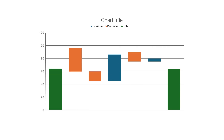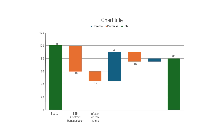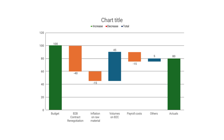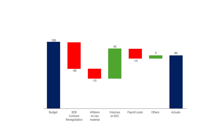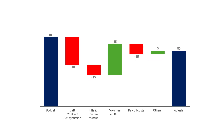Let's design one. Start by using clear categories that match your story — for example: B2B contract renegotiation, inflation on raw materials, volumes on B2C, and payroll costs. Each one becomes a story element. Change the default colors to green and red if no one in your audience is color-impaired. And delete the connectors — they create visual noise. The end result will be a clean, beautiful waterfall that literally tells your story.